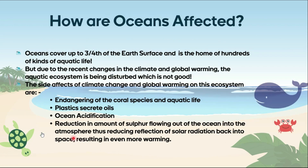What is the effect of this on oceans? Oceans cover up to three-fourths of the Earth's surface and are home to hundreds of aquatic species. But due to recent changes in climate and global warming, the aquatic ecosystem is also being disturbed. The side effects include endangering of coral species and aquatic life, plastics secreting oils harmful to aquatic life and water — the same water which we drink — and ocean acidification, because carbon dioxide diffuses into the water, increasing temperature and converting to carbonic acid, reducing ocean pH. This also reduces the amount of sulfur flowing out of the ocean into the atmosphere, which reduces the reflection of solar energy back into space, resulting in even more warming cycles.